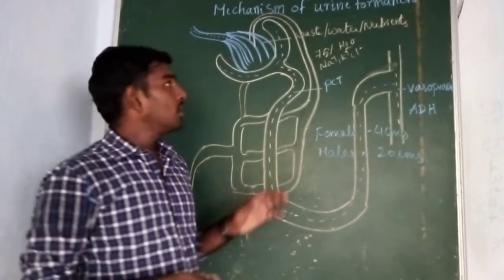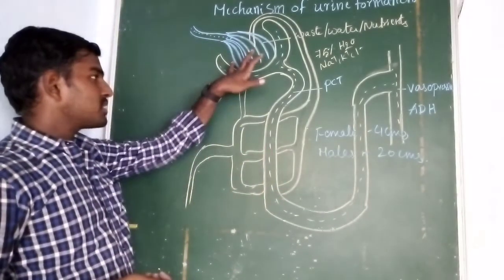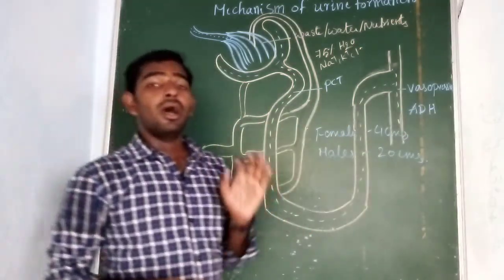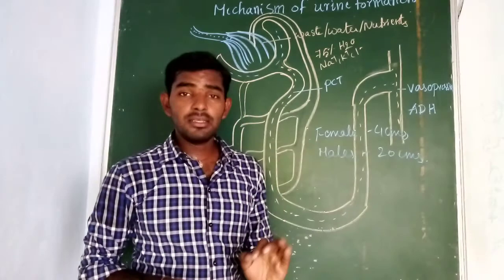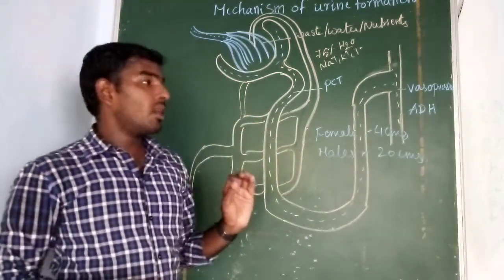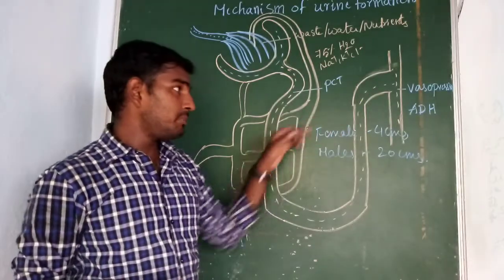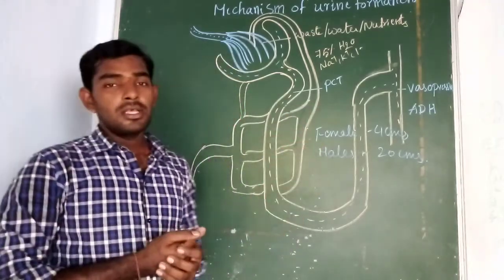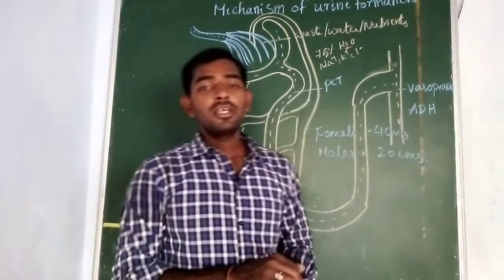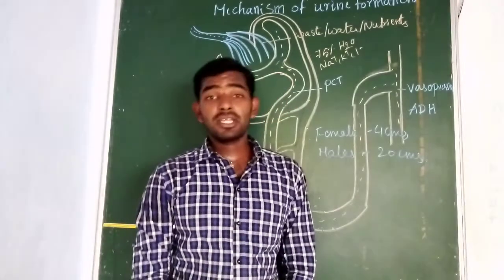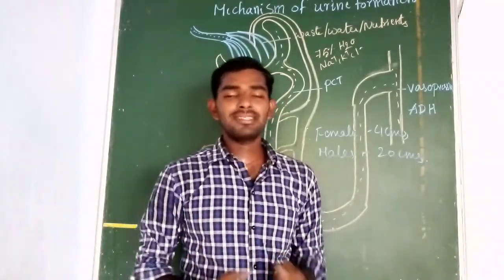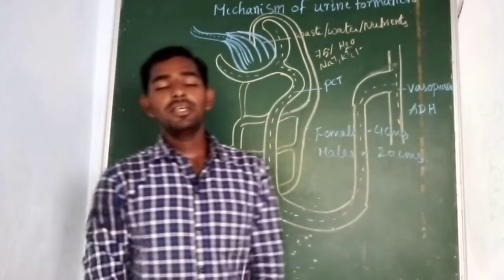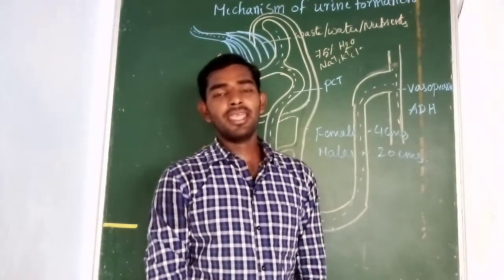So this is about the mechanism of urine formation in humans, including glomerular filtration, tubular reabsorption, tubular secretion, and the formation of hypertonic urine. The pH of urine is always acidic at 6.0, and the concentration of urine is maintained by the tubular secretion of the DCT and PCT along with the vasopressin hormone, which is the anti-diuretic hormone. If you like this video, please subscribe, like, and comment with suggestions. Thank you for watching — have a nice day!